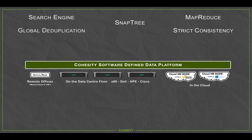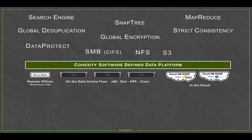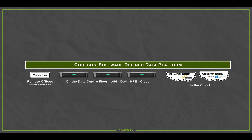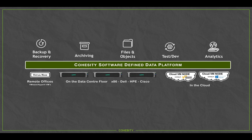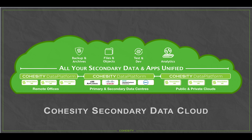What's unique about our platform is all the different features built into it: our patented SnapTree technology, our index engine, global deduplication, encryption, and support for NFS, S3, and SMB protocols. These are not bolt-ons — they're built directly into our platform. So as we collapse different workloads on top of us, they all share these capabilities. Anything we do for backup and recovery can take advantage of global deduplication, just like our scale-out NAS can. That's really the concept of Cohesity — what we call a secondary data cloud — the ability to unify all your secondary data and applications from your remote office through your data center and into the cloud.